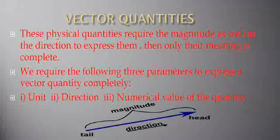We require three parameters to express a vector quantity completely: first, unit; second, direction — East, West, North, or South; and third, the numerical value of the quantity — for example, 5 in '5 kilometers.' Examples of vector quantities include displacement, velocity, acceleration, momentum, and force.